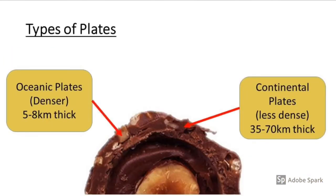On the crust itself there are two types of plates. Oceanic plates are a little denser in density, while continental plates are less dense. The denser ones are also the thinner ones — oceanic plates are about 5 to 8 kilometers thick, whereas continental plates can be up to 70 kilometers thick.